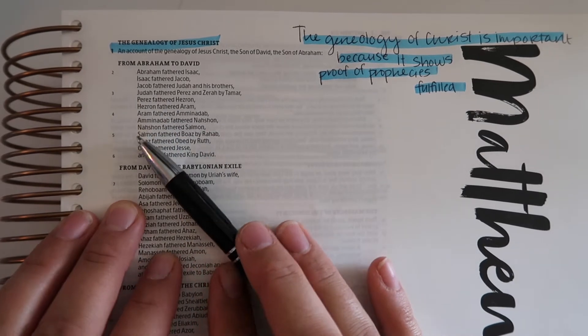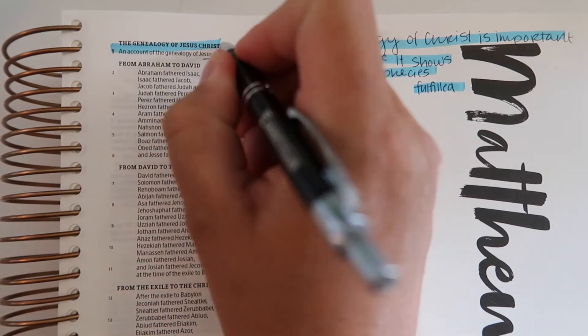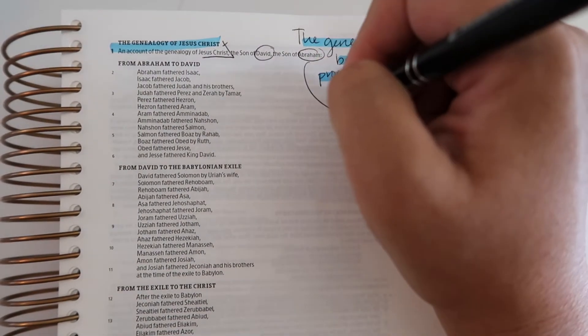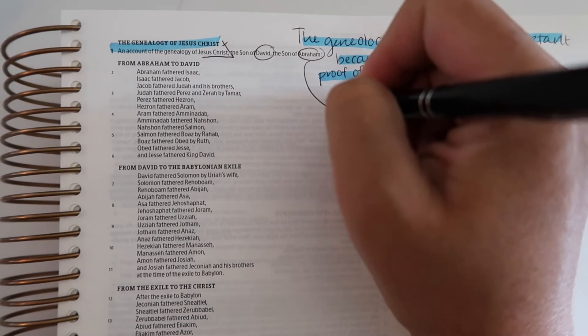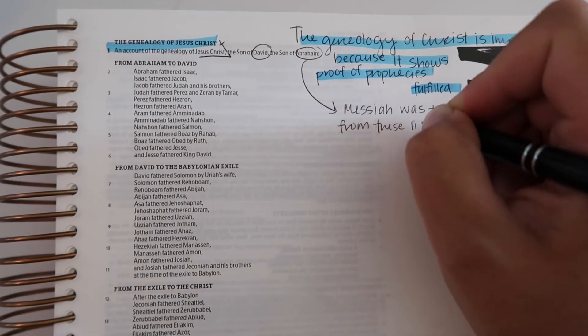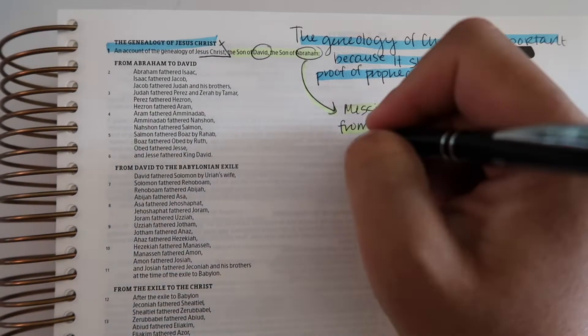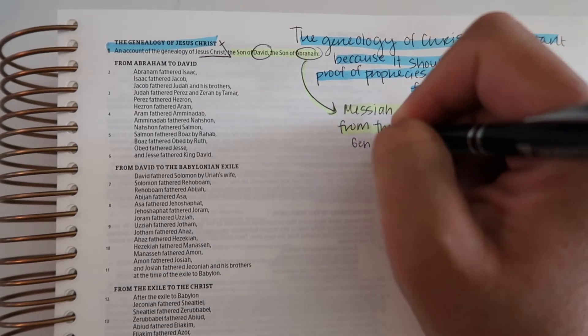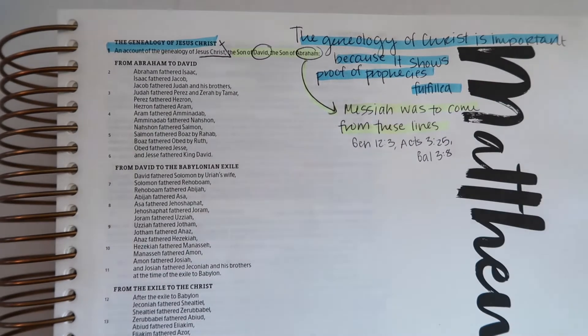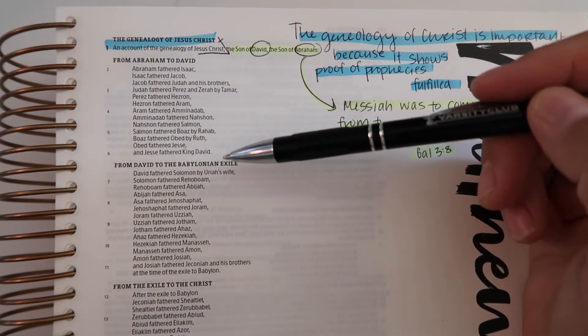Whenever I see Jesus Christ I'm going to underline it and put a cross. Son of David, son of Abraham - so I'm going to put a little arrow and say the prophecy said that the messiah was to come from these lines. You can find those verses or those prophecies in Genesis 12:3.